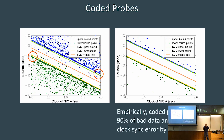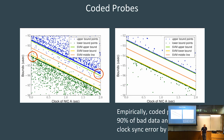There was a question about whether the outliers below the green line form patterns — we think it's just random, perhaps queuing happened that the coded probe filter didn't catch. Balaji didn't have a theory that there was something systematic going on there. The coded probes allowed us to discard about 90% of the bad data, and the clock sync was a factor of four better than with just the raw SVM.